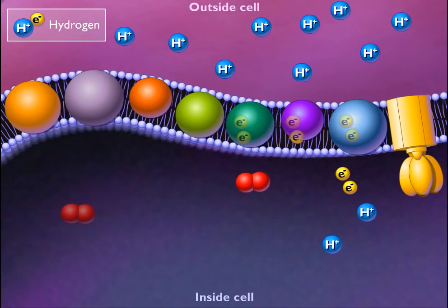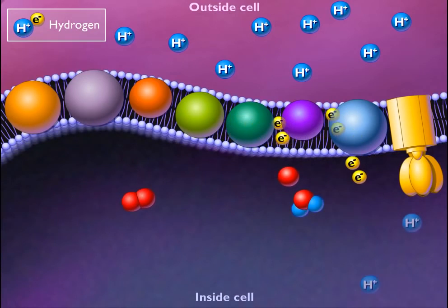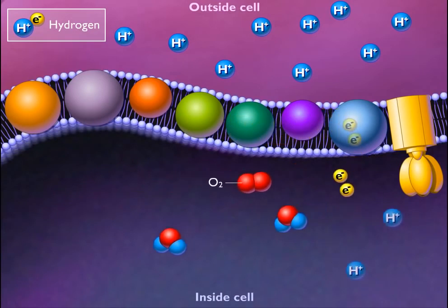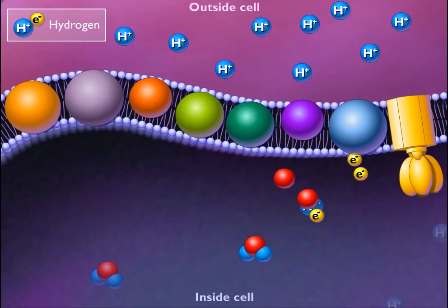During aerobic respiration, the last carrier protein transfers a pair of electrons to oxygen at the end of the electron transport chain and water is formed.